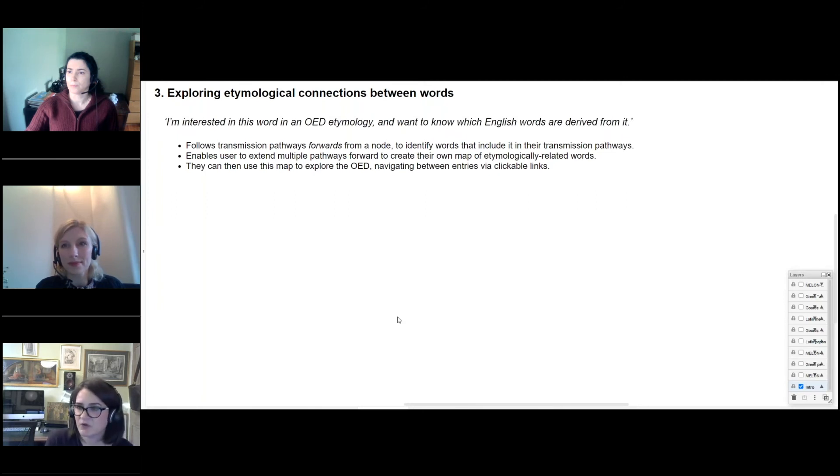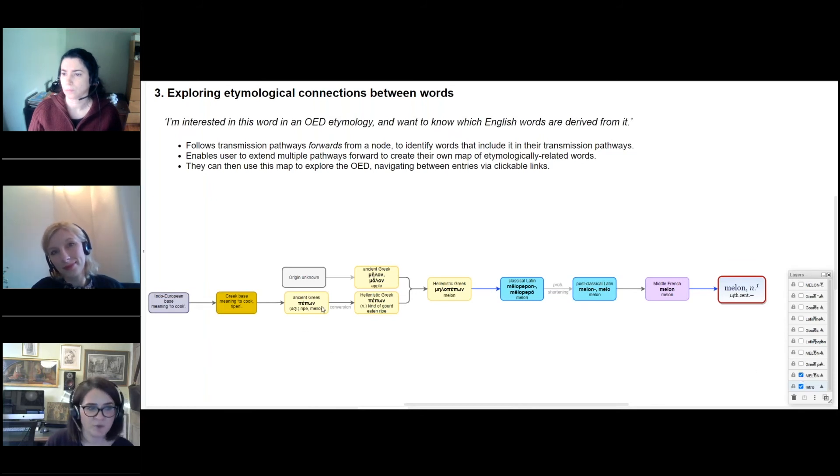So far, I've talked about some ways to visualize the etymology of a single English word. Building on these ideas, we have also experimented with some ways in which a tool that maps transmission pathways might actually be used more adventurously to reveal etymological connections between different words in the OED and allow you to explore them. So imagine, for example, you just use the tool like we did just now to map the transmission pathway of melon. You might be interested to know more about one of the words in the timeline here and wonder which other English words might ultimately be derived from it. So say, if this Hellenistic Greek word for an edible gourd caught your eye, the visualization tool could then give you a list of OED headwords whose main transmission also includes this word and let you select which transmission pathway to expand forwards.